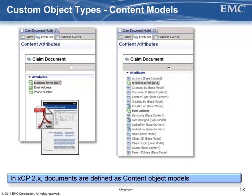In XCP 2, custom document object types are called content models. When you create an XCP custom content object model, which inherits from base content XCP core by default, when the application is first deployed, a custom EMC document object type will be created that has DM document indicated as its parent type. You can create a content model that has no attributes, or a content model that inherits attributes from another content model. Unlike with business objects, content models can contain renditions and versions. A content model cannot inherit from a business object, or vice versa.